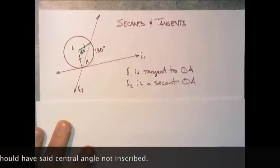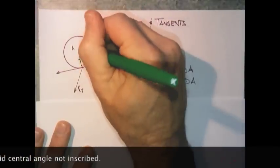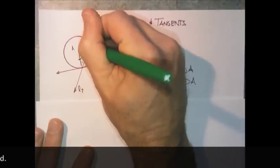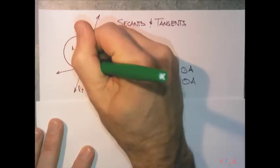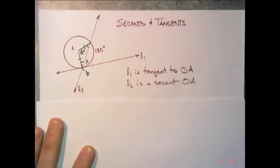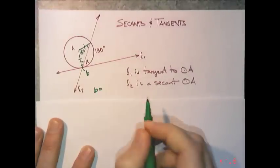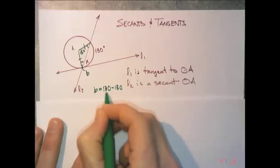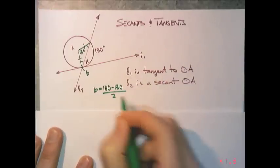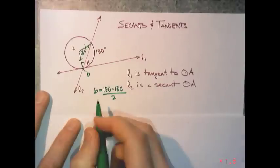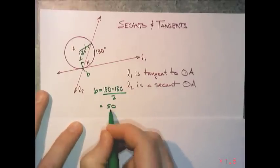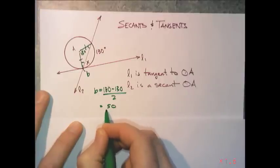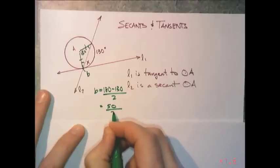In an isosceles triangle, this angle right here will be congruent to this, the base angles are congruent. Let's call that angle B. B would be equal to 180 minus 130, but then we have to cut it in half because there are two of them. So 180 minus 130 is 50 degrees, cut it in half and that's 25.